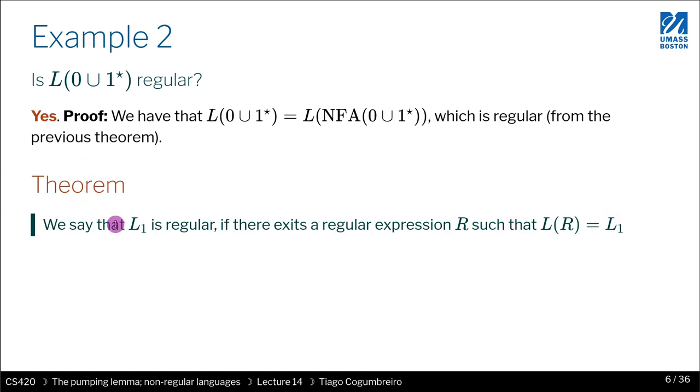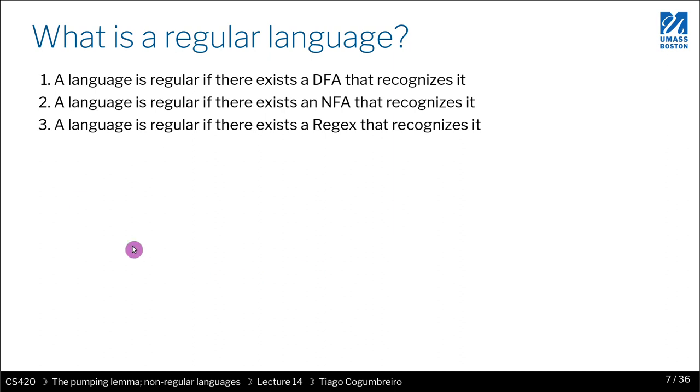And because the language in the equivalence is the same, that means that the regular expression, the language derived by the regular expression is itself regular as well. So we can define this new theorem that says that if you have a language that is equivalent to some regular expression, to the language given by the regular expression, then L1 is regular. So what we've learned from here is that we have three different ways of identifying, of proving if a language is regular. And we've actually discussed the three of them. We saw how we can define a DFA, we saw how we can define an NFA, and we saw how we can define a regular expression. And in your homework, we even saw how we can prove that a certain regular expression has a certain language.